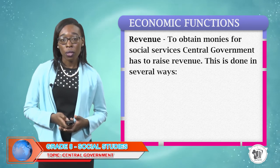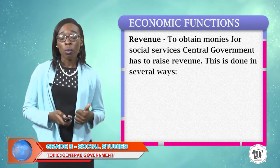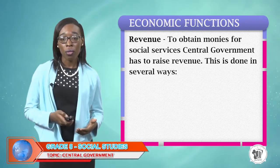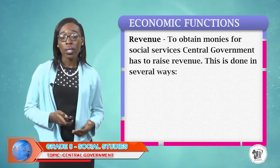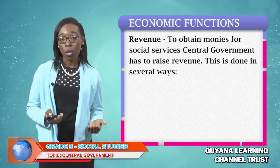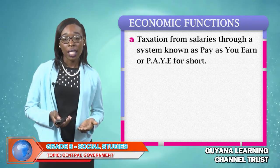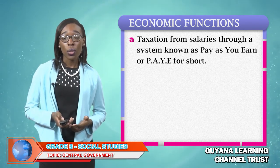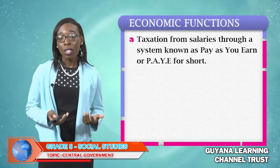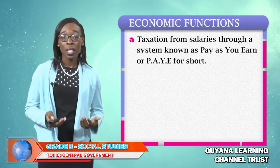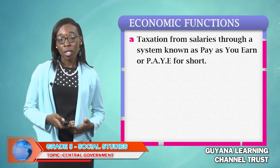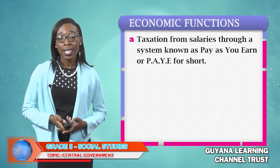Let's look at the economic function. One of the functions government performs concerning the economy is revenue. To obtain monies for social services, central government has to raise revenue. This is done in several ways. For example, taxation from salaries through a system known as Pay As You Earn, or PAYE for short. You can ask your parents or other working adults about PAYE — as income earners, they do pay PAYE tax.